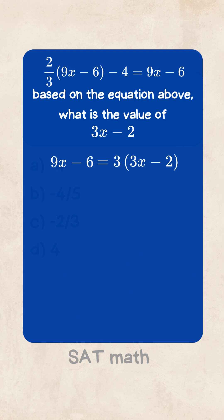So rewrite the equation like this. 2/3 times 3 simplifies to 2. Easy. Now the line reads: 2(3x - 2) - 4 = 3(3x - 2).